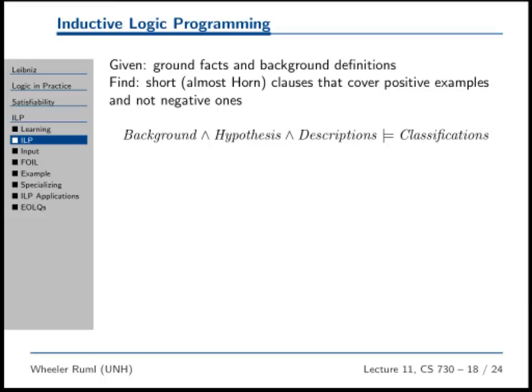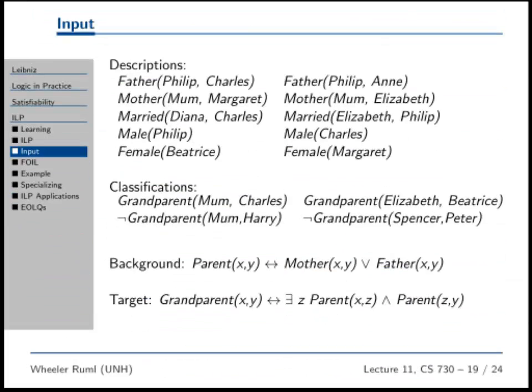The next thing we're going to do is in first-order logic — something where you get background information: here are these people, here are their relationships. Here are some facts about a new concept called grandparent. Figure out what it means to be a grandparent based on positive and negative examples. You're going to derive that grandparent means there exists a Z such that parent(X, Z) and parent(Z, Y), then grandparent(X, Y). That's the kind of learning I'm going to give you an algorithm for next time.